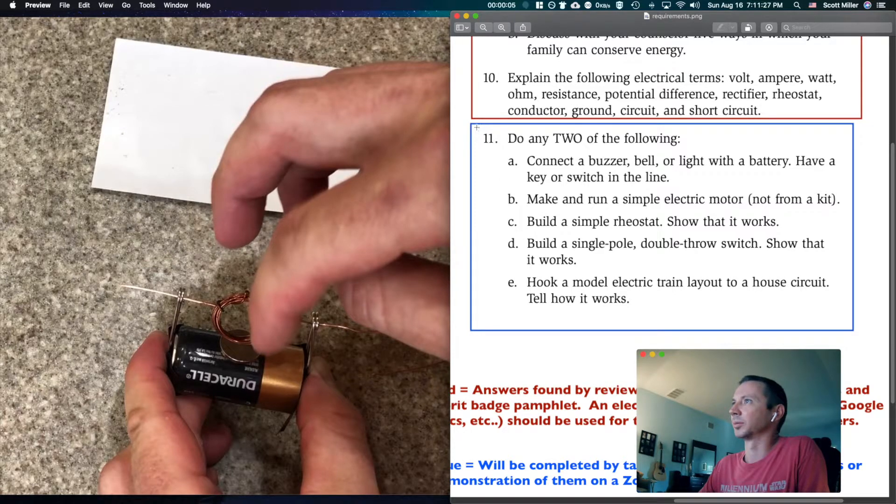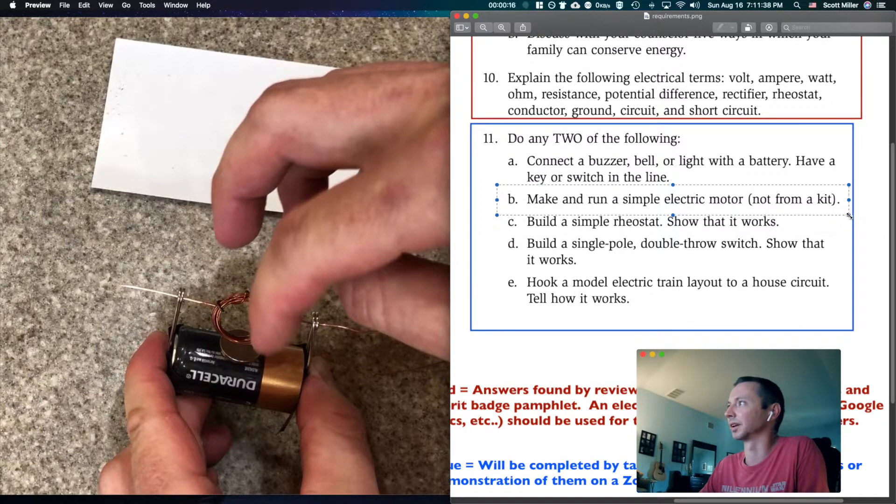This video is going to cover requirement 11b of the electricity merit badge for Scouts BSA. Requirement 11b is to make and run a simple electric motor, not from a kit, so using just things from around the house.